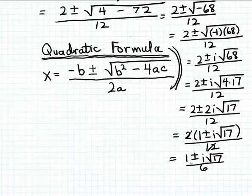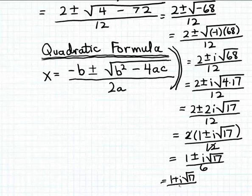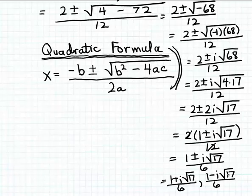So there are the two solutions, fully simplified by hand, to my original quadratic equation. One solution is (1 plus i times the square root of 17) divided by 6, and the second solution is (1 minus i times the square root of 17) divided by 6. That quadratic equation had two solutions, and both of them are complex numbers.